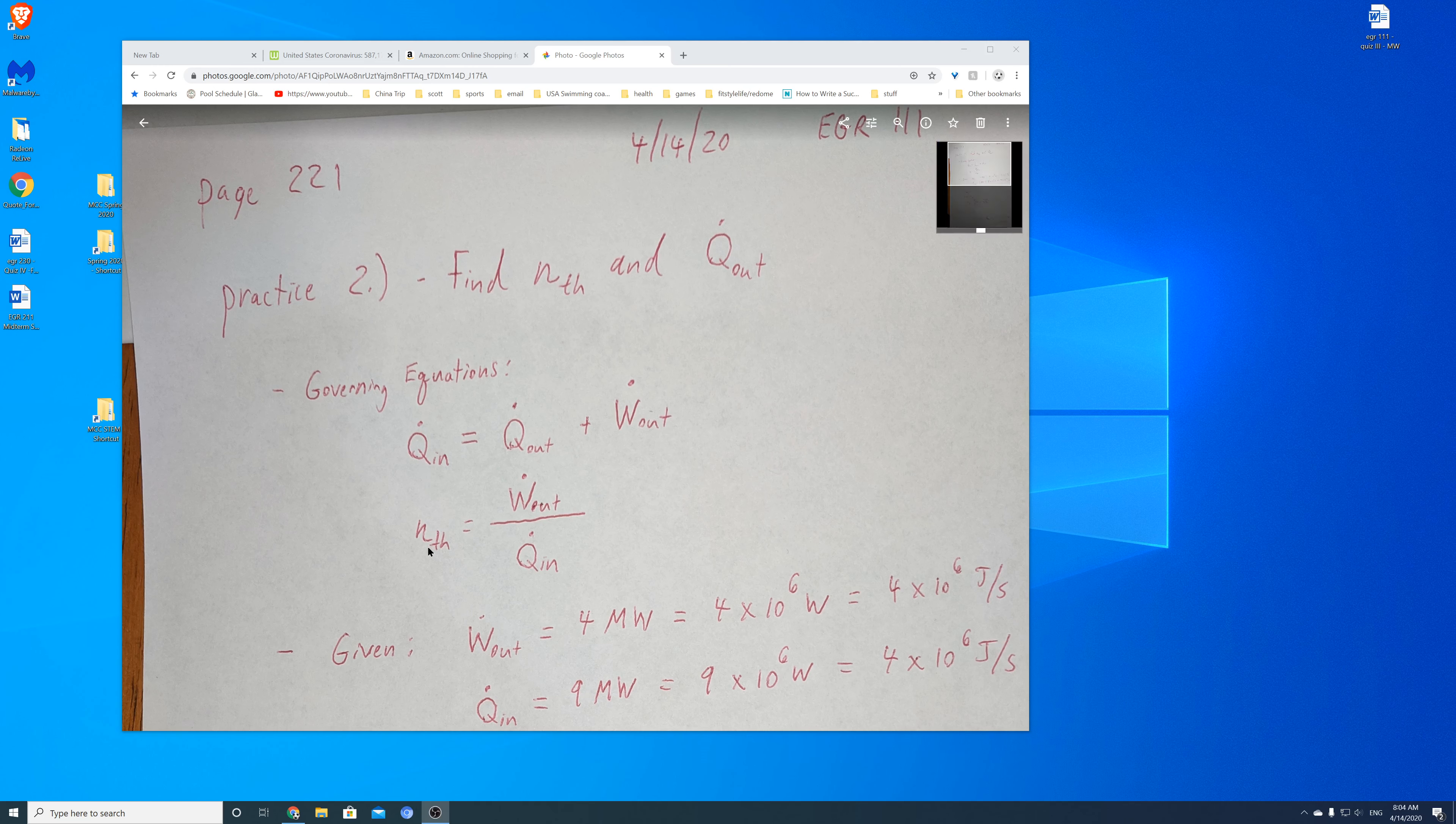The next is the efficiency. Efficiency is basically how much energy, or in this case, how much power (the dot representing that it's a rate or energy per unit time) - it's the rate of work being done over the rate at which heat is coming into the system. So it's how much of that heat energy you're able to use to do useful work. That's the efficiency.